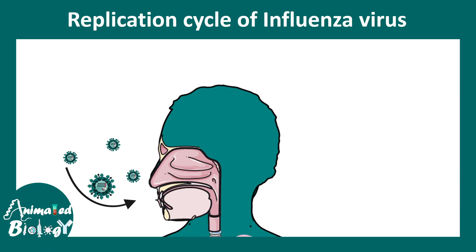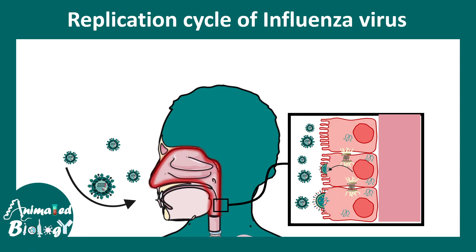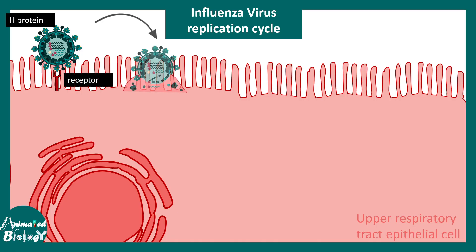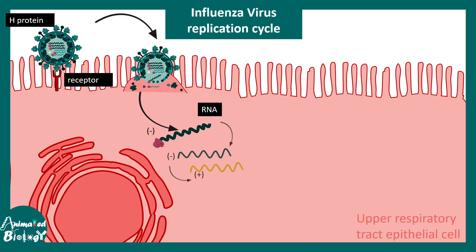Since influenza is an upper respiratory tract disease, it is generally transmitted through droplets and affects the respiratory epithelial cells, which have sialic acid receptors on top of them used by the virus to get into the cells. The hemagglutinin protein (H protein) binds to the receptor, allowing the viral envelope to fuse with the cellular membrane, thereby releasing all the genetic content of the virus into the cytoplasm. The negative-sense single-stranded RNA is then free in the cytoplasm.